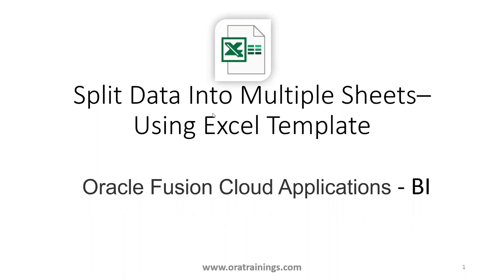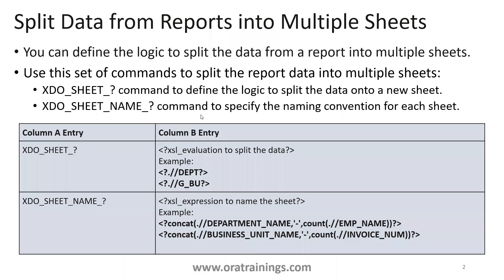Let us understand the logic behind splitting the data. There are two important tags or XDO functionalities. The first one is called xdo_sheet_, wherein we have to mention the way you want to split the data — nothing but using which particular grouping or group entry you want to split the data into sheets.